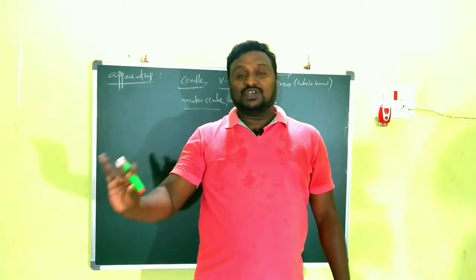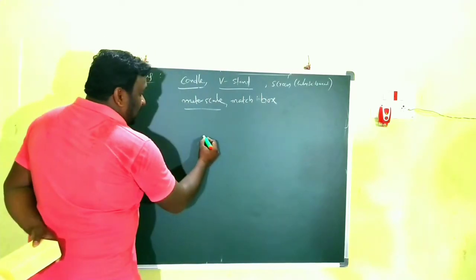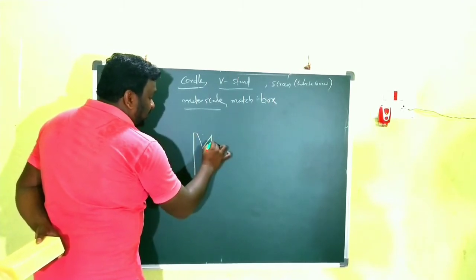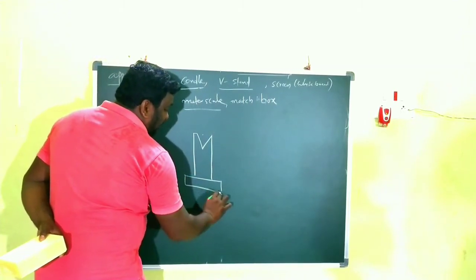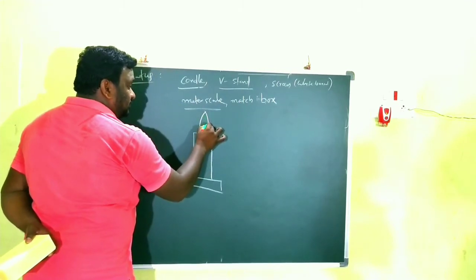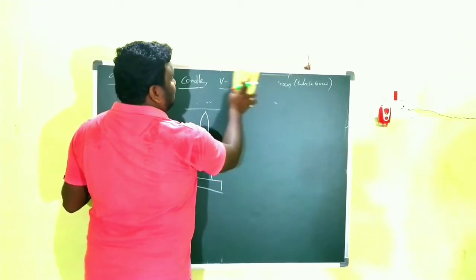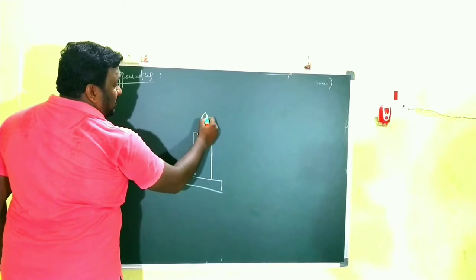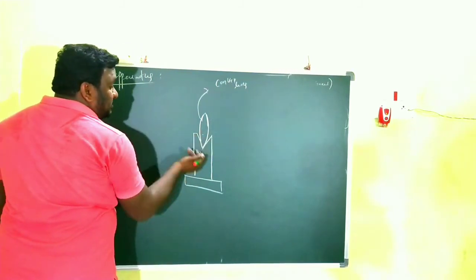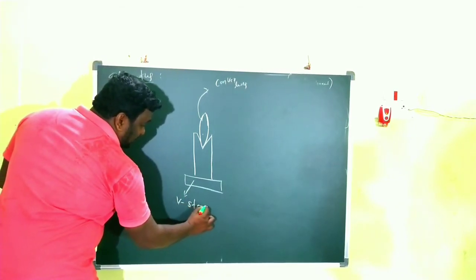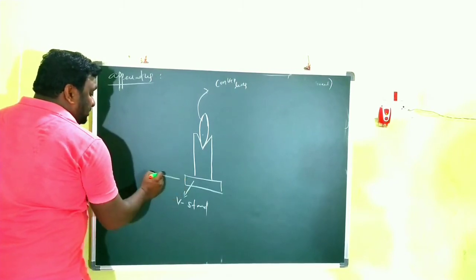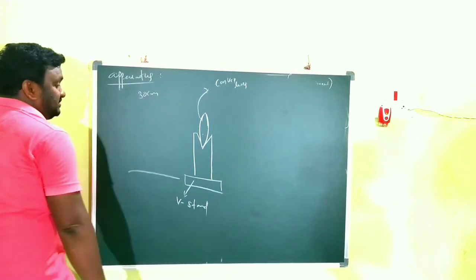Watch carefully, children — this is a very important topic that also appears in inter-secondary examinations. The first step is to take a V-stand and keep a convex lens in it. Then, using a meter scale, we select a particular distance — here I am taking 30 centimeters. At that 30 centimeters distance, we place the lit candle. The flame of the candle will serve as the object.